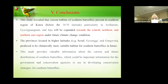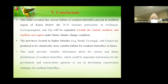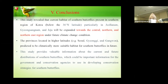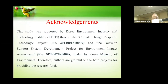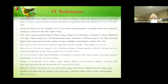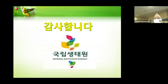In conclusion, this study revealed that the current habitat of southern butterflies is present in the southern region of Korea below 36 degrees latitude, particularly in Jeollanam-do, Gyeongsangnam-do, and Jeju. But in the future, it will expand toward central, northern, and northeastern regions under future climate change. The provinces located in higher latitudes — Seoul, Gyeonggi, and Gangwon — are predicted to be climatically more suitable habitat for southern butterflies in the future. This kind of study will be helpful for preparing climate change adaptation strategies as well as species conservation. Thank you.